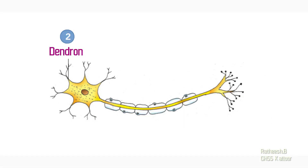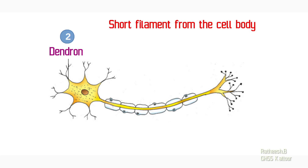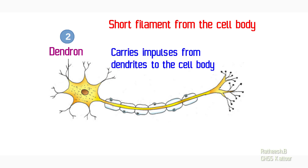The second main part is dendron. You can see dendron in this picture. Dendrons are short filaments from the cell body. The function of dendron is to carry impulses from the dendrite to the cell body.